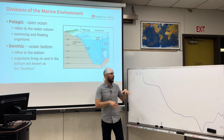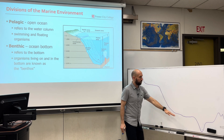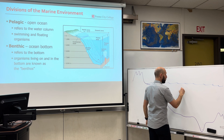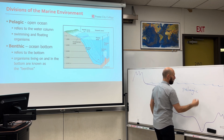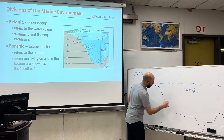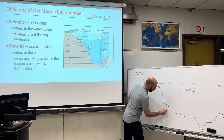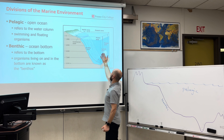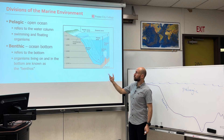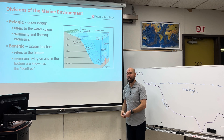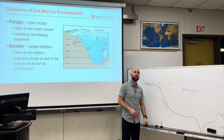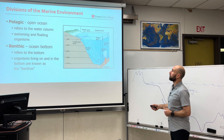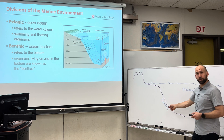We can look at the entire ocean and say there's the ocean bottom and there's the open ocean. The open ocean we term pelagic. The ocean bottom we give the term benthic. Benthic hosts organisms that live on the bottom, known as benthos, and the pelagic environment hosts organisms that swim or float — plankton and nekton. More on that in another lecture, but for now the marine environment is divided into the ocean bottom and the open ocean.